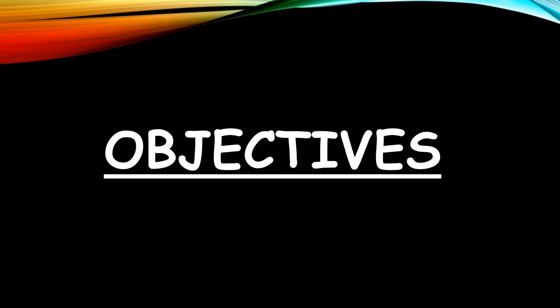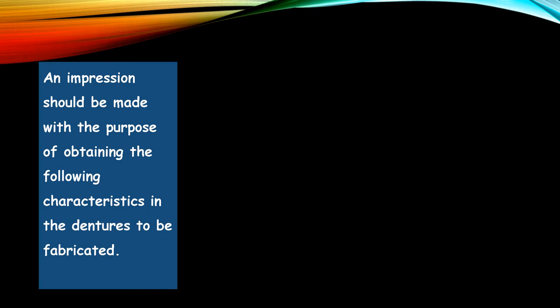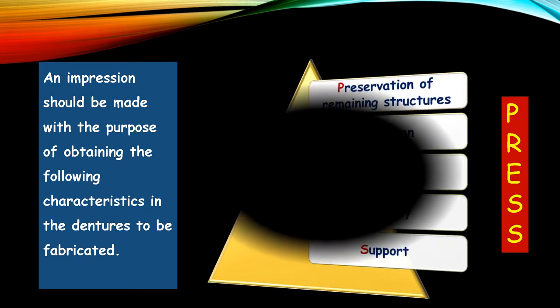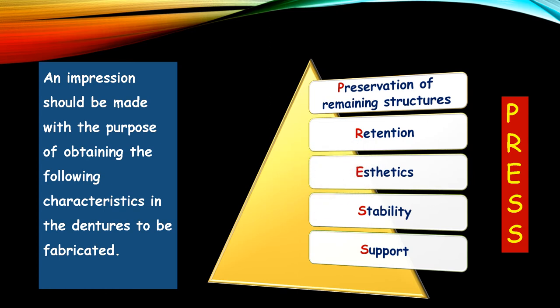Let's talk about some objectives of impression making. An impression should be made with the purpose of obtaining certain characteristics in the dentures to be fabricated. These can be remembered with the word PRESS: P for Preservation of remaining structures, R for Retention, E for Aesthetics, and S for Stability and another S for Support.